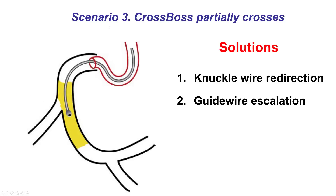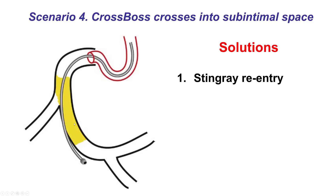The third option is that the CrossBoss partially crosses but stays within the occlusion. The way to make progress is to advance a knuckled guide wire, or to switch to a guide wire escalation technique. The fourth scenario is crossing into the sub-intimal space distal to the distal cap — this is actually the intended part of the CrossBoss, and the next step is reentry, done in the majority of cases using the Stingray system.